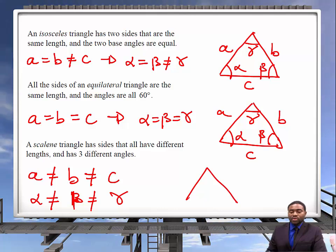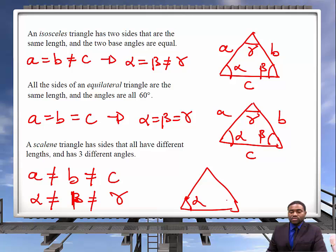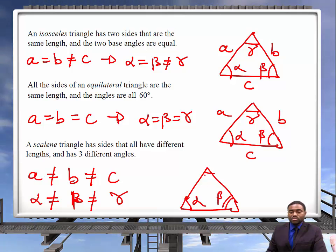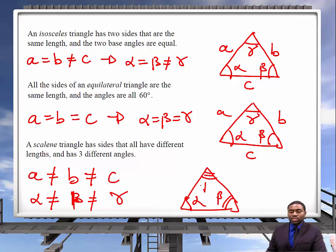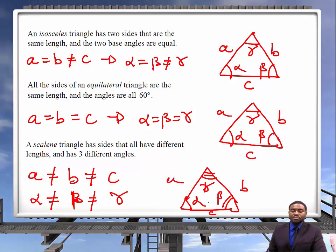If you are to draw a scalene triangle, this will be alpha, this will be beta, this will be gamma. This is A, B, C — all sides and angles are different.